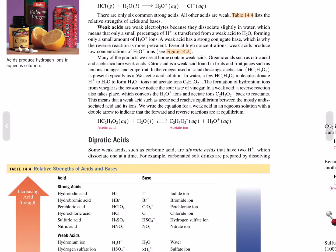Many of the products we use at home contain weak acids. Organic acids such as citric acid and acetic acid are weak acids. Citric acid is a weak acid found in fruits and fruit juices such as lemons, oranges, and grapefruits. In the vinegar used in salad dressings, acetic acid is present typically in a 5% acetic acid solution. In water, a few acetic acid molecules donate protons to water to form hydronium ions and acetate ions.